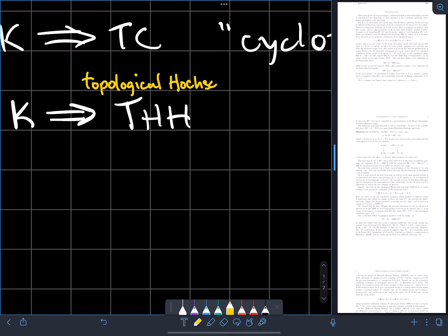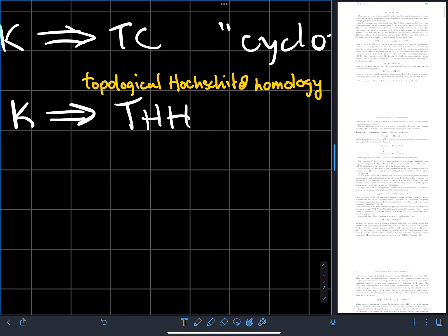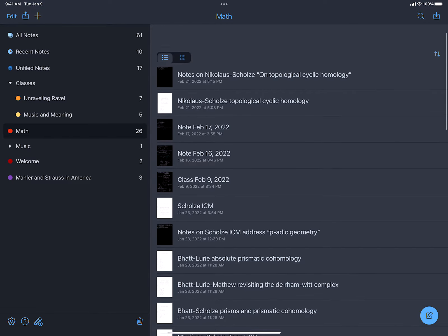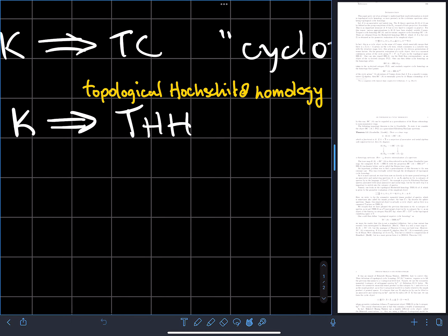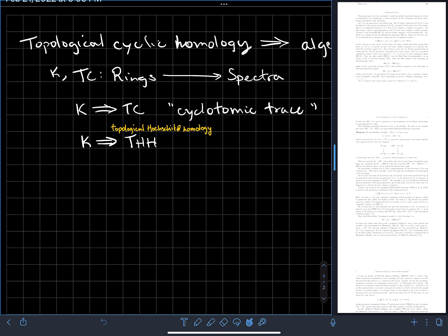It's called a trace because it comes from a map that goes from K-theory to an easier to define invariant, topological Hochschild homology. This is topological Hochschild homology. Earlier, there is a natural transformation from K-theory to THH called the Dennis trace.